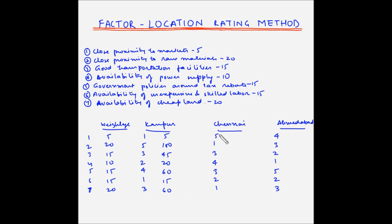Similarly for Chennai: 5 multiplied by 5 is 25, 20 multiplied by 1 is 20, 15 multiplied by 3 is 45, 10 multiplied by 4 is 40, 15 multiplied by 3 is 45, 15 multiplied by 2 is 30, and 20 multiplied by 1 is 20.